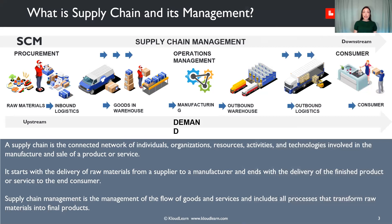What is supply chain and its management? A supply chain is the connected network of individuals, organizations, resources, activities, and technologies involved in the manufacture and sale of a product or service. It starts with the delivery of raw materials from a supplier to a manufacturer and ends with the delivery of the finished product or service to the end consumer. Supply chain management is the management of the flow of goods and services and includes all processes that transform raw materials into final products.